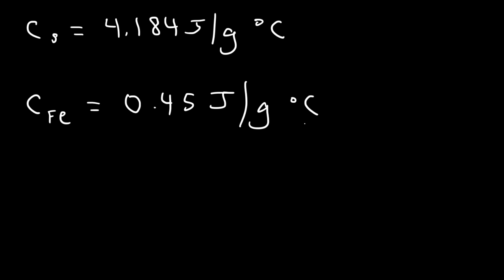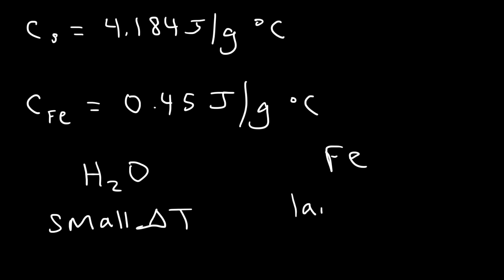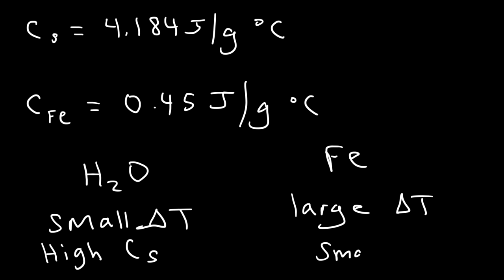So if we apply the same amount of heat energy to water and to iron, assuming they have the same mass, the temperature change of water will be small, but the temperature change of iron metal will be relatively large. The reason for this is because water has a high specific heat capacity, but iron metal has a small specific heat capacity. So water can absorb a lot of energy without changing the temperature significantly, whereas applying heat to iron metal will cause the temperature to rise greatly in a very short time.